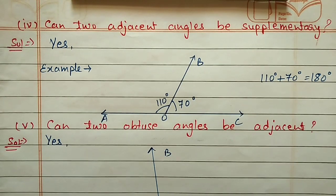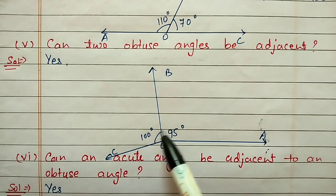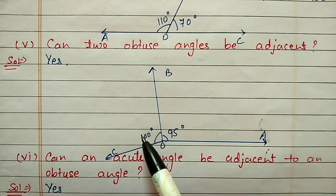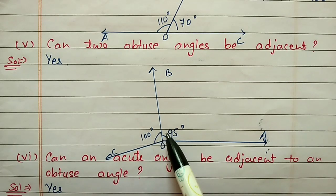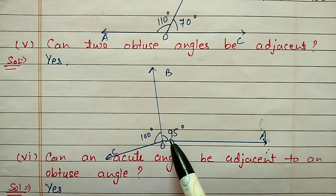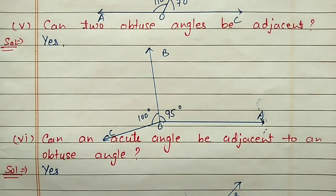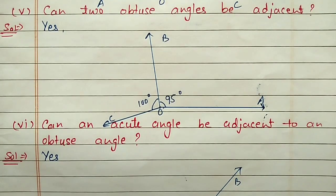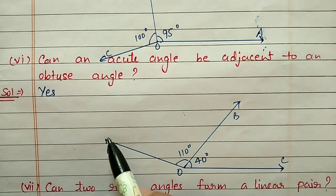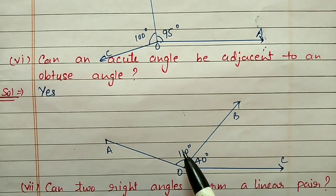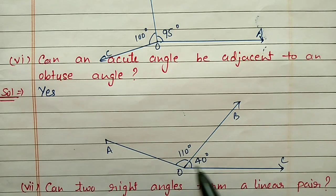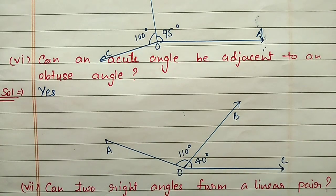So yes, two adjacent angles can be supplementary. Fifth part: can two obtuse angles be adjacent? Yes, we can take two adjacent angles which are obtuse. Here 95 degrees and then 100 degrees — both angles are obtuse and both are adjacent. Sixth part: can an acute angle be adjacent to an obtuse angle? Yes. Here angle AOB is 110 degrees, which is obtuse, and angle BOC is 40 degrees, which is acute, and both are adjacent to each other.